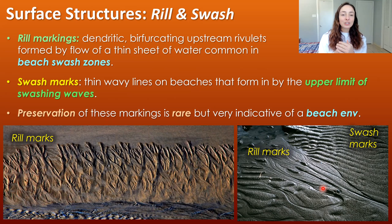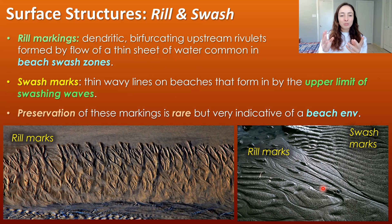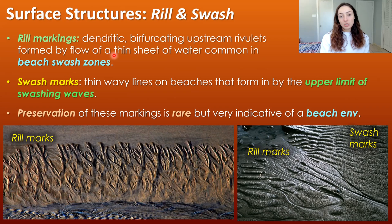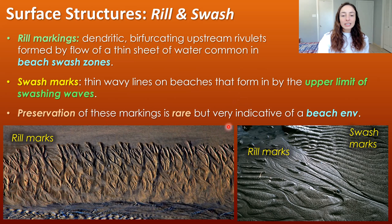The next bedding plane markings are rill and swash markings. These are surface structures — they form on the tops of beds rather than soles, though sometimes they can do both. Rill markings are dendritic, bifurcating upstream rivulets formed by the flow of a thin sheet of water, common in beach swash zones. Swash marks are thin wavy lines that form on beaches — you've probably seen these. The preservation of these markings is rare, but very indicative of a beach environment when found in the rock record.